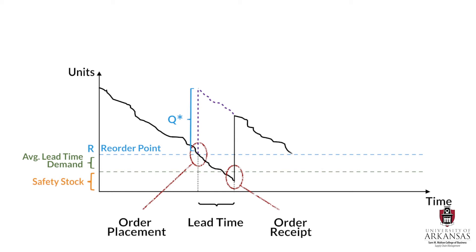Again, an order of size Q will be placed when the inventory position gets down to the reorder point level. By now, you probably see why we call it the RQ model. There are two key decision parameters: the reorder point R, which tells us when to place an order, and the order quantity Q, which tells us how much to order.